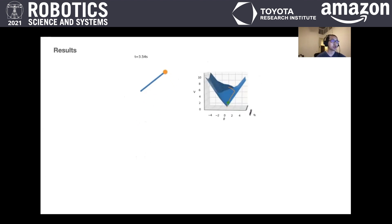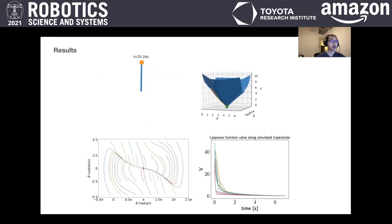We first show the results of swinging up the pendulum with the synthesized Lyapunov Function. We also draw the phase plot and the Lyapunov Function value for simulation from many different initial states. Both the state and the Lyapunov Function value converge to the goal.